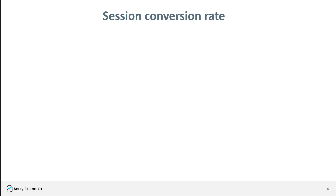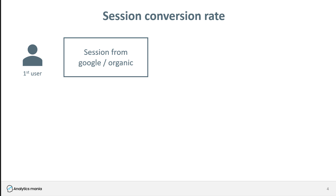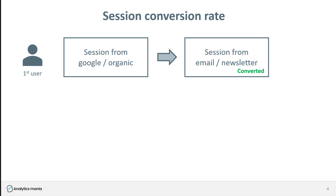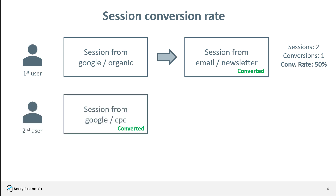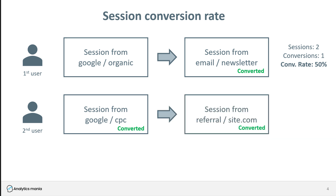Let me explain with an example. Say we have one user who came from Google organic search, then the next day returned via email newsletter and converted. That's two sessions, one conversion — session conversion rate is 50%. Then a second user came from a paid ad campaign and converted, and also had another session from a different site and converted too. That's two sessions with conversions — 100% conversion rate. Even if the first session had five conversions, it still counts as one in session conversion rate, because what matters is just whether a conversion happened.